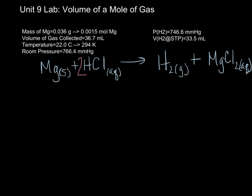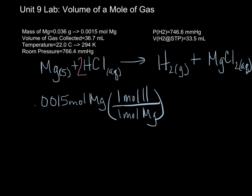If I actually write this out, using the ratio, for every one mole of magnesium, I should produce one mole of hydrogen gas. Therefore, I should end up with the same number of moles of hydrogen gas. So, now I'm ready for my molar volume.